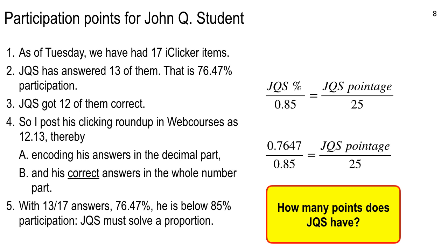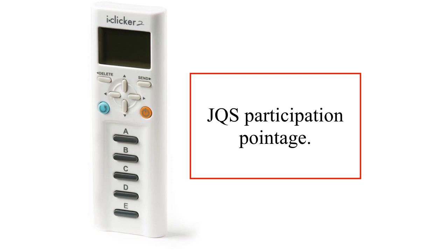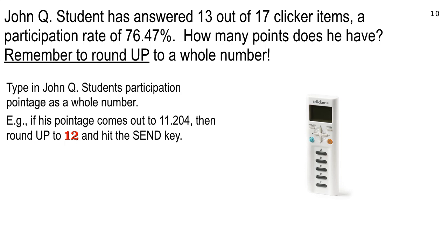If you have 13 questions answered in your grades page, you'd have the same calculation. For this clicker question, it's a numeric entry — figure out your proportion, cross-multiply, and find John Q. Student's pointage. Remember, I always round up: if you have 11.00001, I round that up to 12.